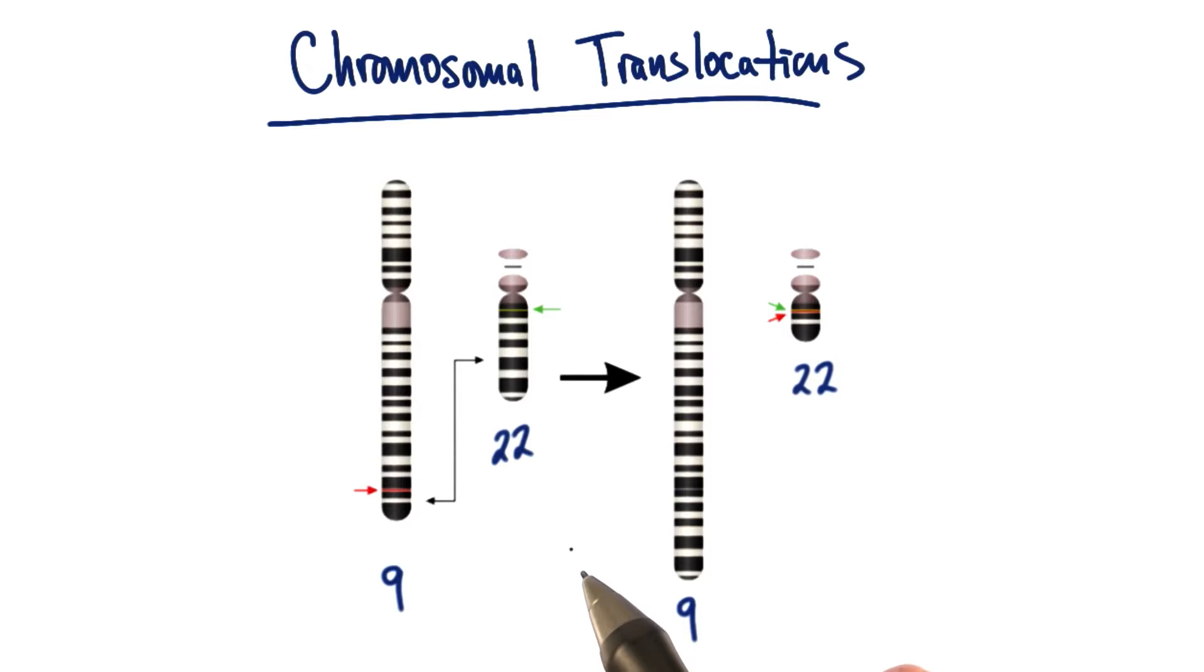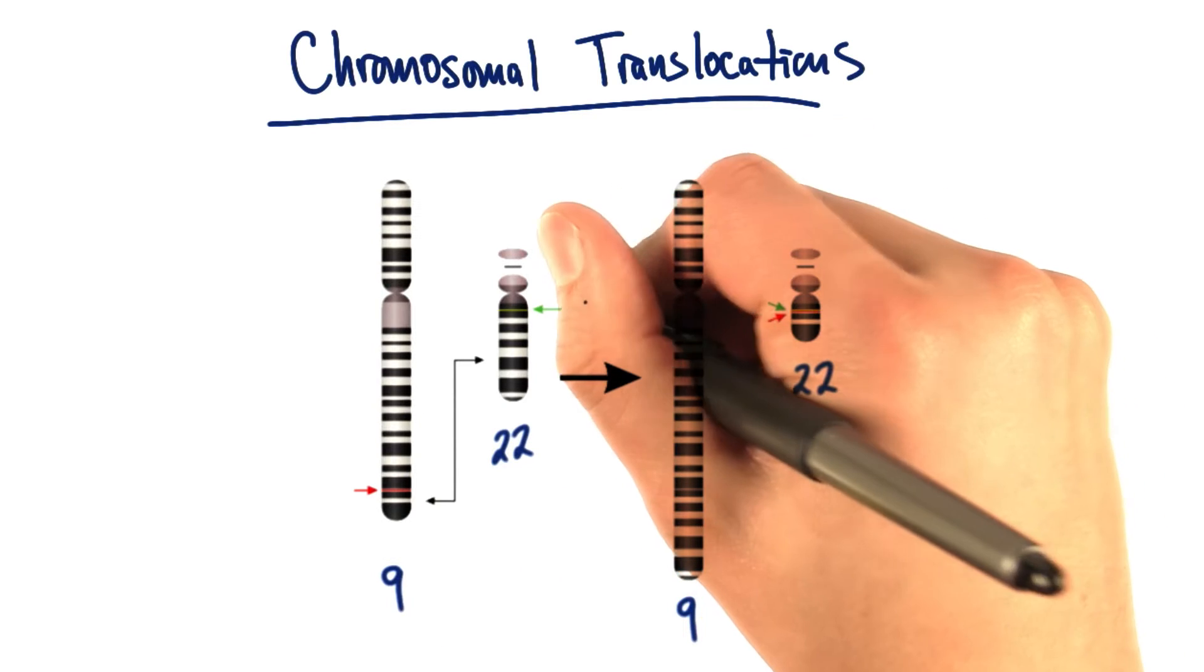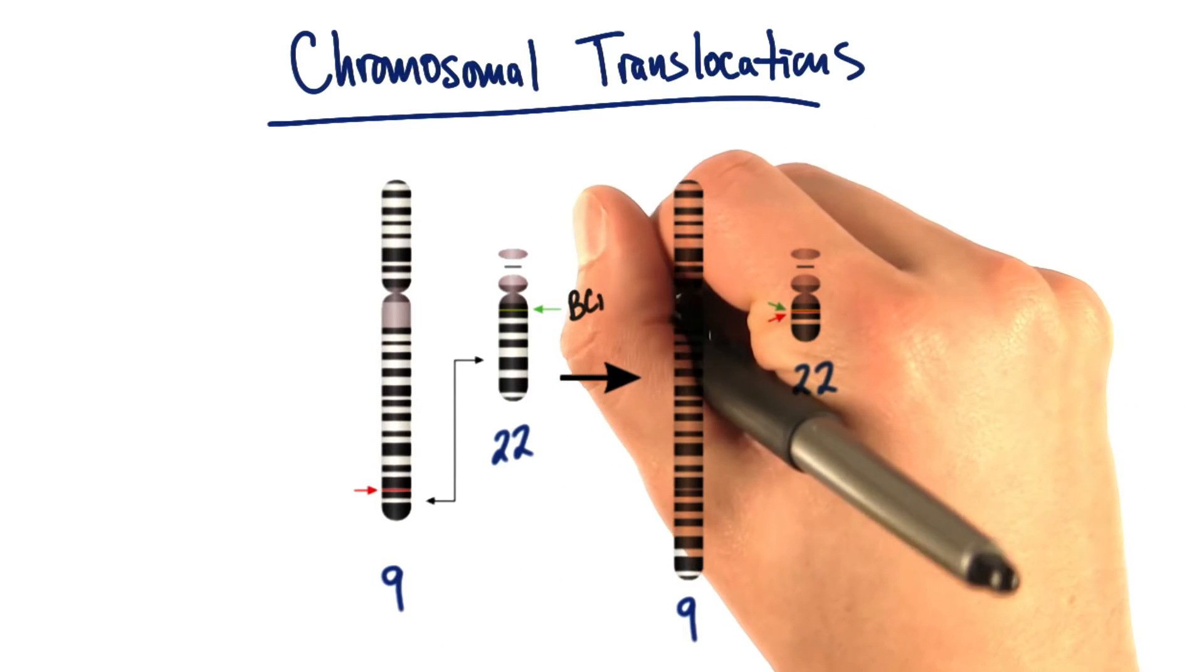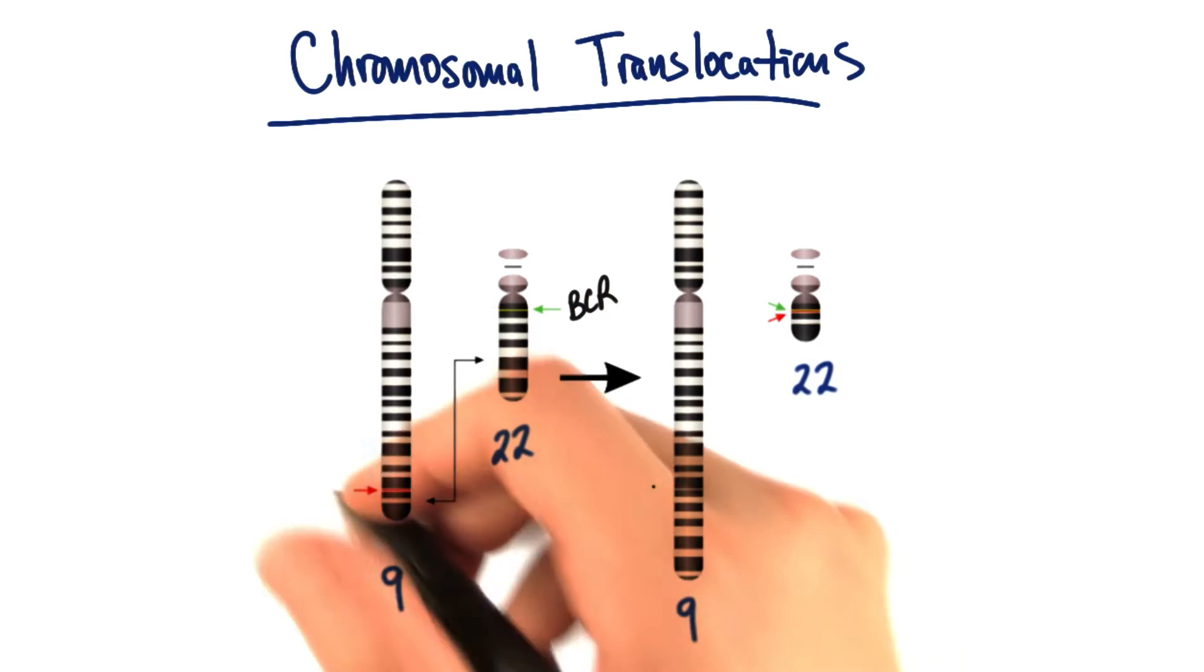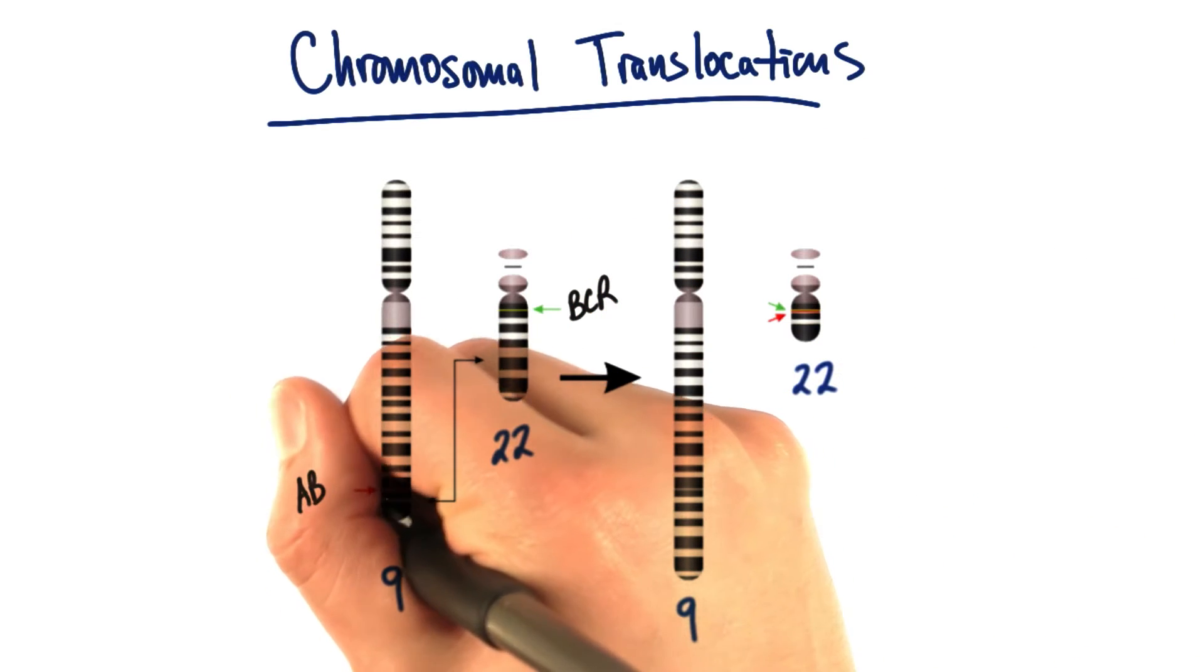A very famous one that results in something called the Philadelphia chromosome is actually a chromosomal translocation between chromosomes 9 and chromosome 22. There is a gene on chromosome 22 called BCR, and another gene on chromosome 9 called ABL.